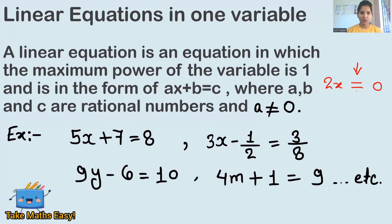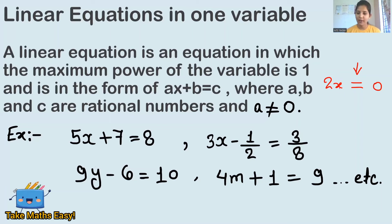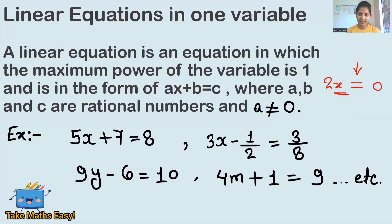So if you see the equals-to sign, that means it is an equation. Now, in a linear equation, the power of the variable is one. Variable — it's important to first understand what a variable is. A variable is something whose value is unknown, and variables are represented by letters — alphabets like a, b, c, d, x, y, z, m, n and so on.